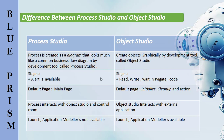If you see on my left hand side we are having Process Studio, and on my right hand side I am having Object Studio. In Process Studio, a process is created as a diagram that looks much like a common business flow diagram. Whereas in Object Studio, a developer or business analyst uses a Blue Prism development tool to create objects graphically.